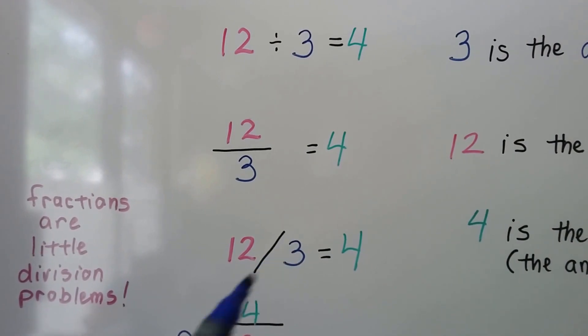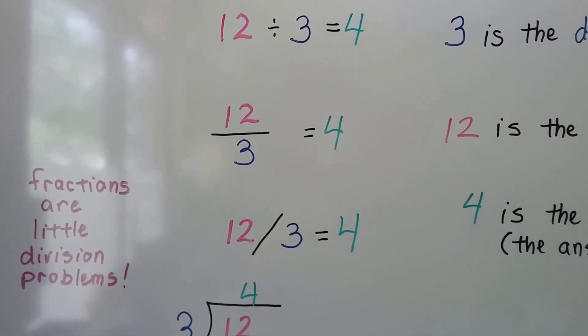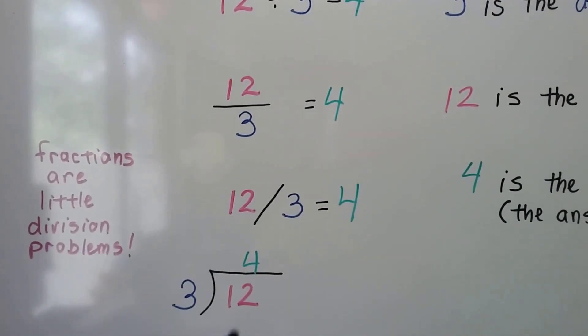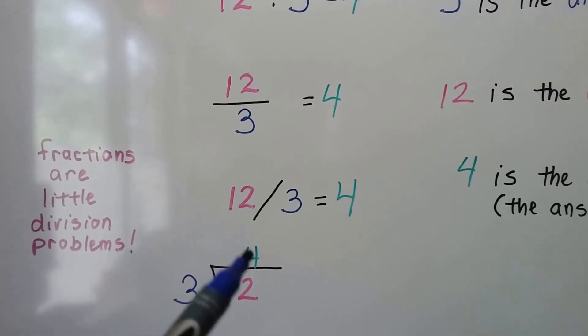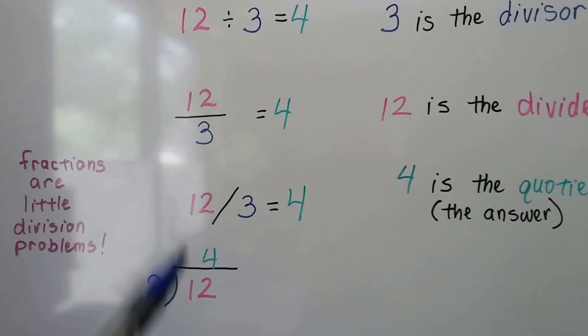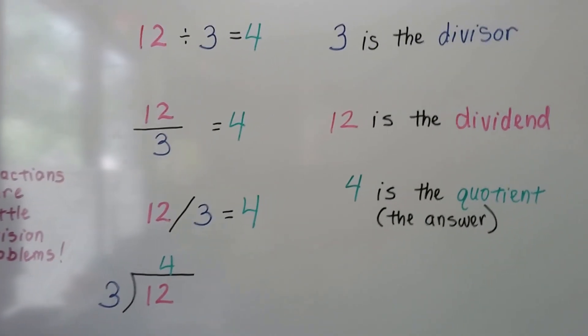You might even see it with a slant like this. That's 12 divided by 3. And this is 12 divided by 3. 3 is going into 12 four times. So just remember that fractions are little division problems.